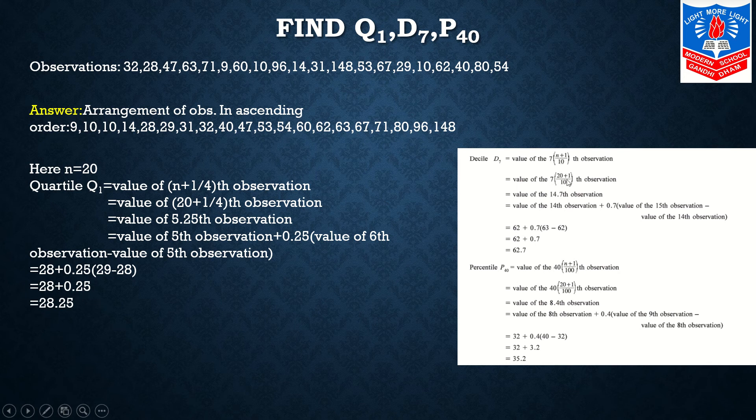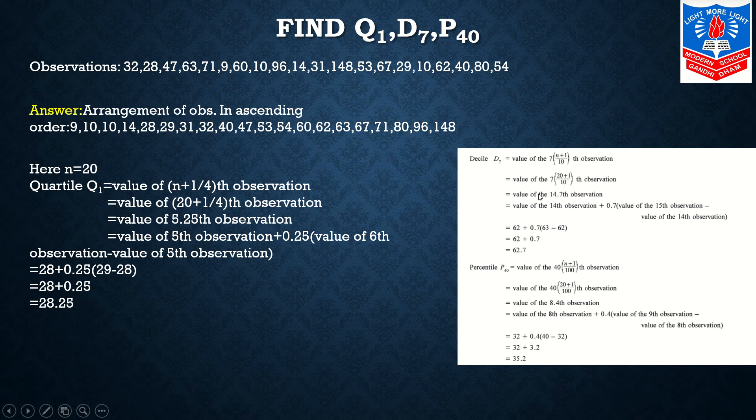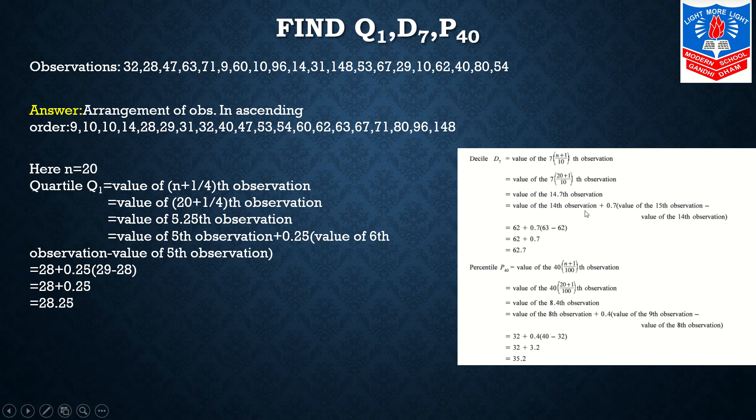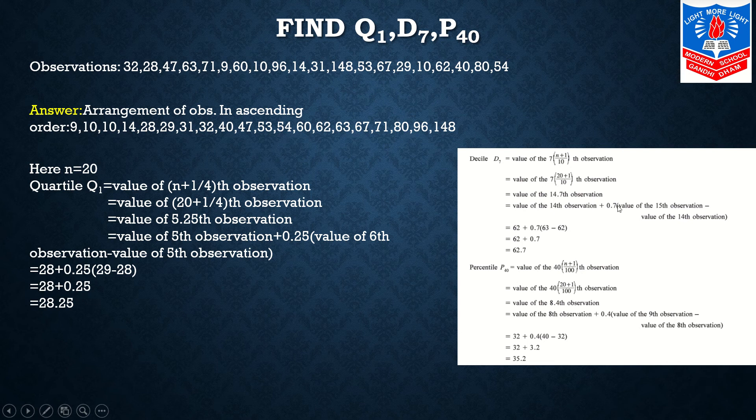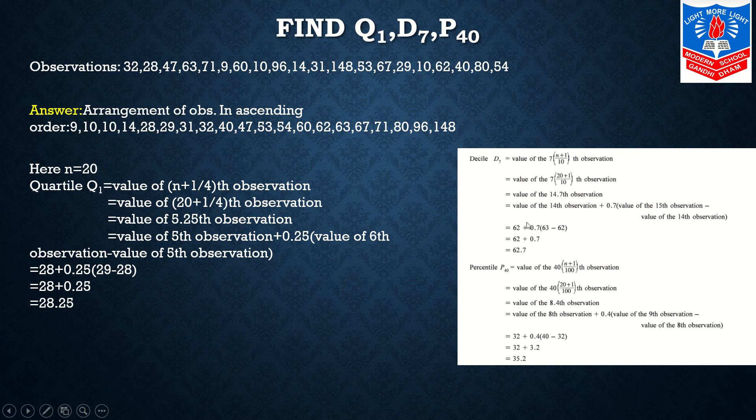So again we move back to our sum. In place of N, 20: (20+1)/10 times 7. After making the calculations I will get 14.7th observation. 14.7 will lie between 15th observation and 14th observation. So value of 14th observation plus 0.7 times (15th observation value minus 14th observation value).